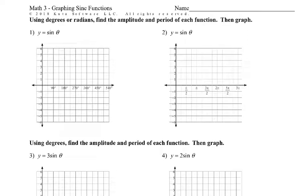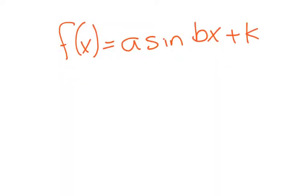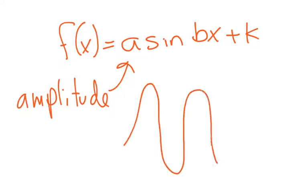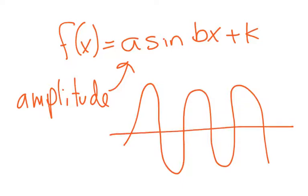Here we are with graphing the sine functions. The thing to remember is what the sine graph looks like. Using this format, there are three important pieces to help us graph. The first is the amplitude, which we call A. The amplitude tells us how high up we go in the hills and how far down we go in the valleys — how high and how low it's going to go.